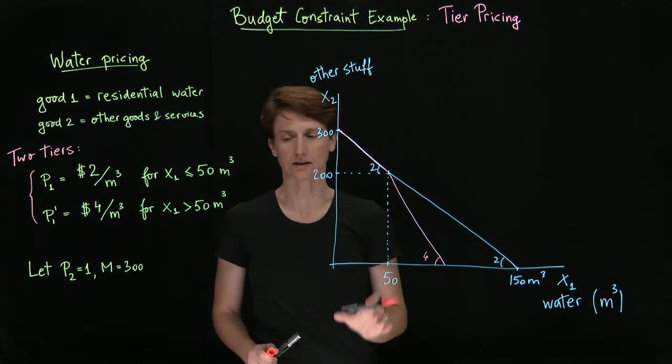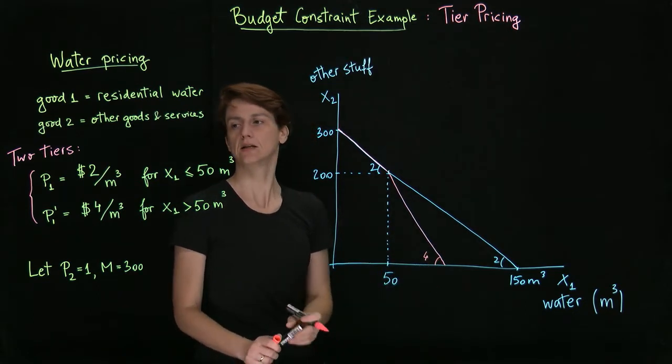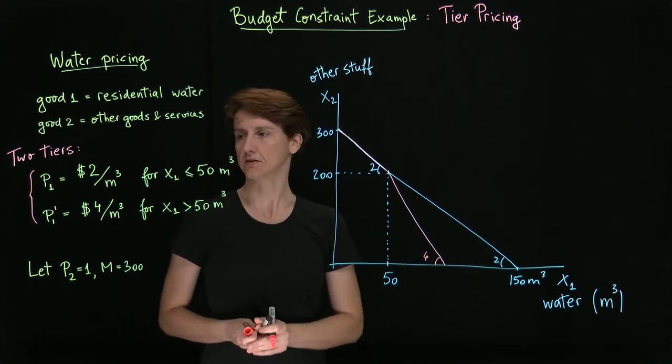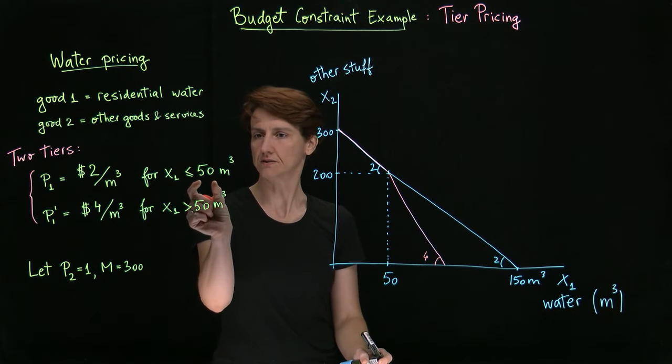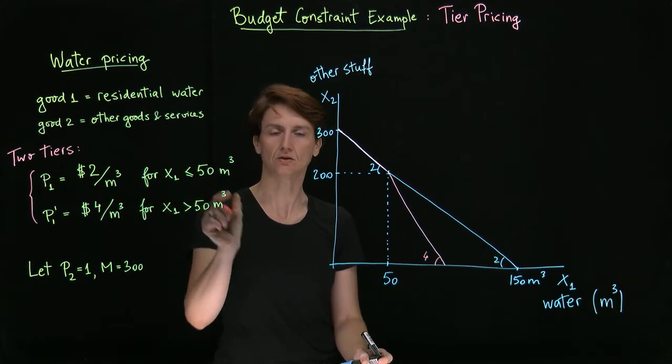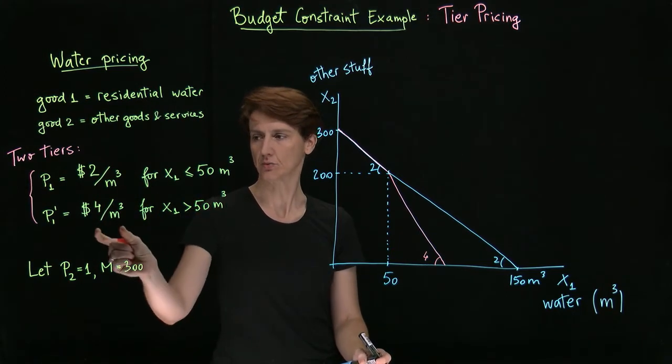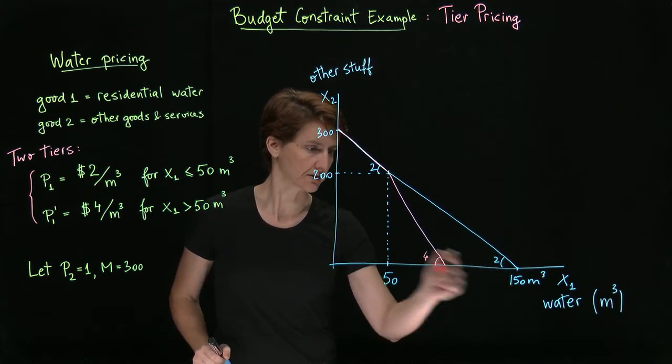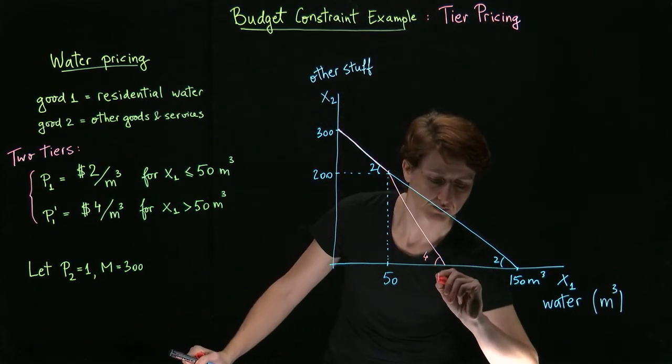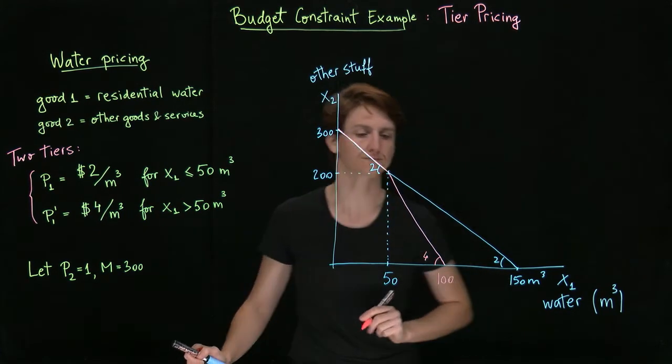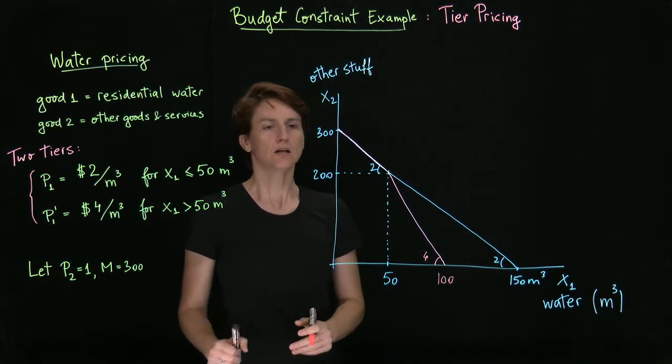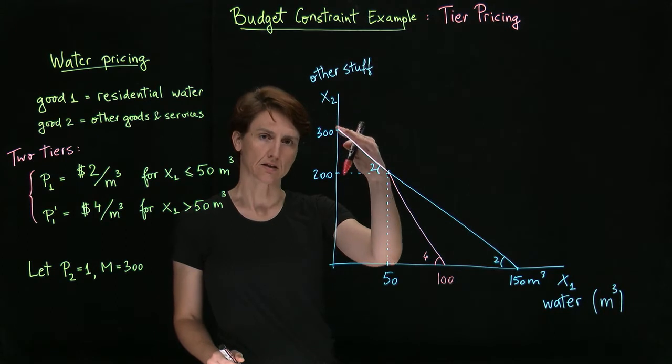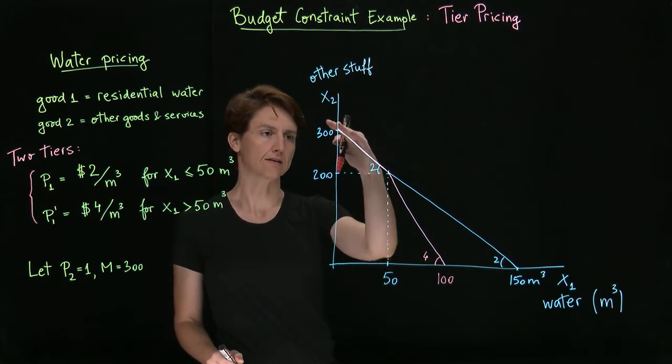And we can calculate how much water can we then buy? Well, as you can see, if you've bought the first 50 cubic meters at $2, then you have $200 left, with which you could buy at most 50 cubic meters in addition. So this will bring you to 100. So the tiered pricing budget constraint will have this shape.